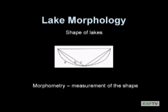Hi, welcome to Limnology. Today we're going to talk about morphology and zonation in lakes, starting with lake morphology. Lake morphology is a term that refers to the shape of a lake, whereas lake morphometry is a term that refers to how we measure and quantify that shape.